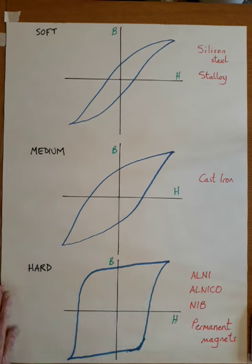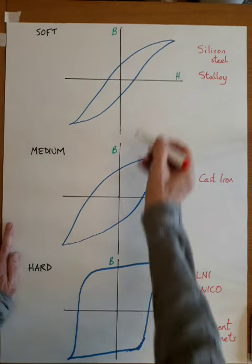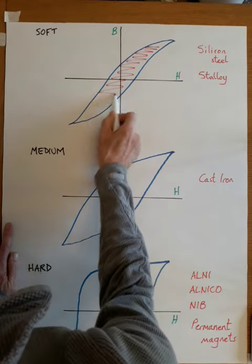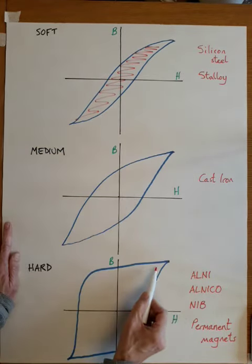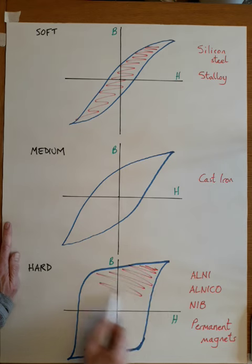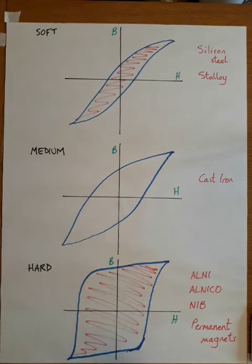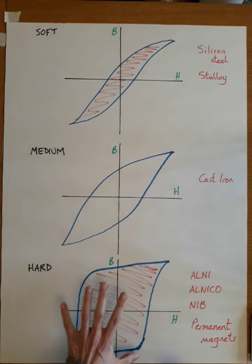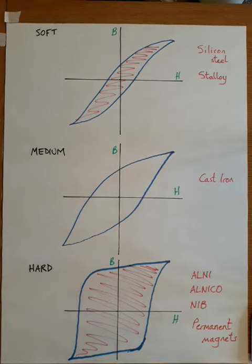A reminder again, the area of the curve, so the area inside the curve, is directly proportional to the energy wasted in magnetizing and demagnetizing the material because they will get warm.